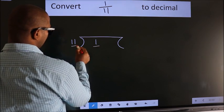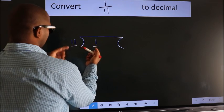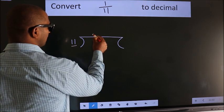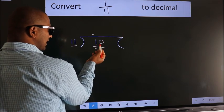Next, here we have 1, here 11. 1 is smaller than 11, so what we do is we put a dot, take 0. Now 10. 10 is still smaller than 11.